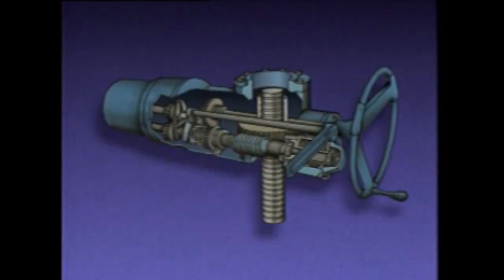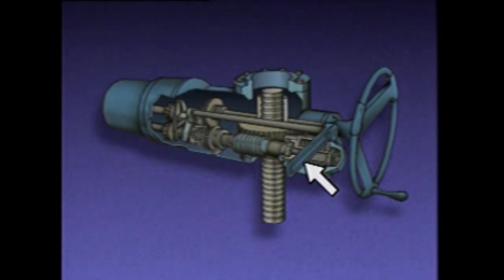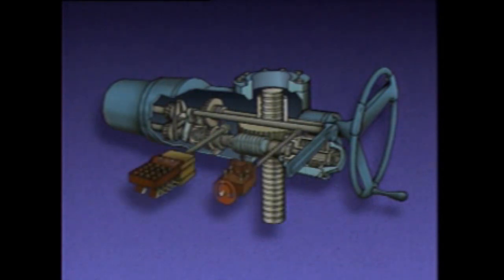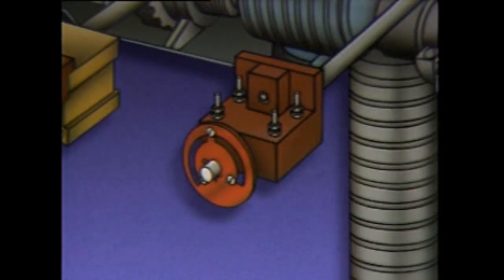A motor operator consists of a motor and a set of gears that turn the valve stem to open or close the valve. It also has a hand wheel, a lever, and switches. This particular motor operator has two types of switches connected to its gears: a limit switch and a torque switch.